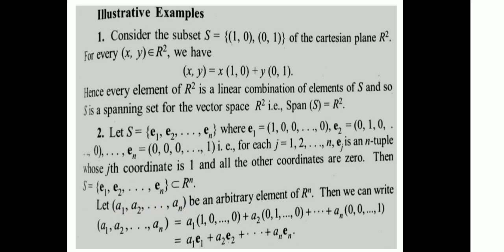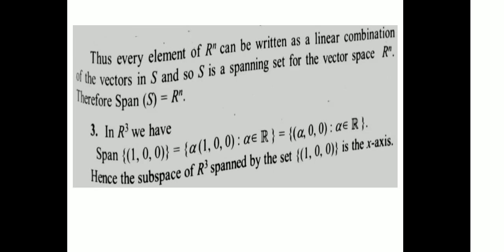We can write: (a₁, a₂, ..., aₙ) = a₁·(1,0,0,...,0) + a₂·(0,1,0,...,0) + ... + aₙ·(0,0,...,0,1) = a₁E₁ + a₂E₂ + ... + aₙEₙ. Thus every element of Rⁿ can be written as a linear combination of vectors in S, so S is a spanning set for the vector space Rⁿ. Therefore span(S) = Rⁿ.